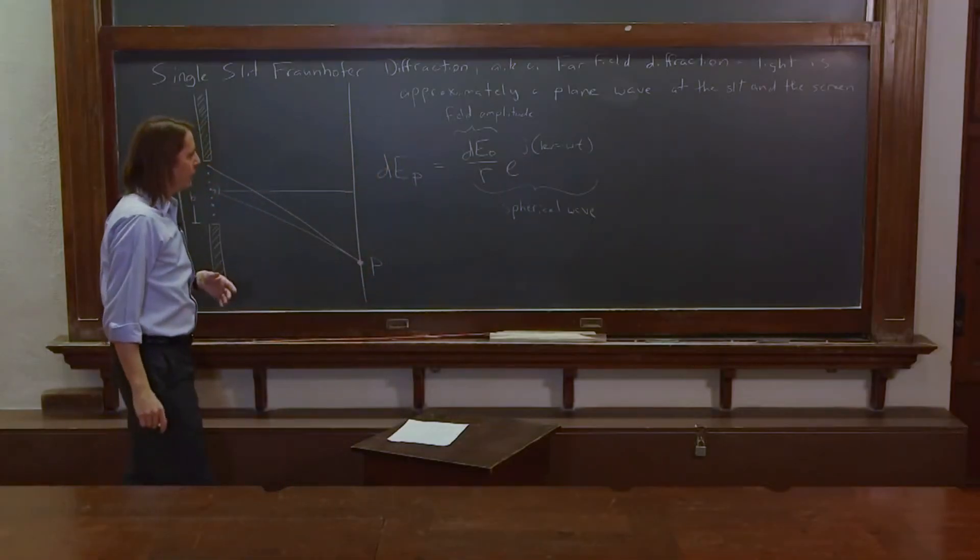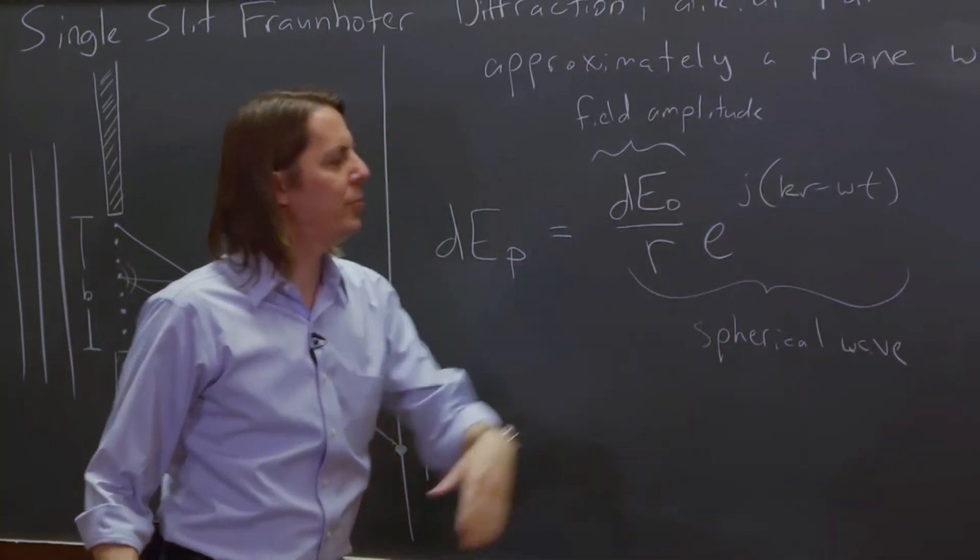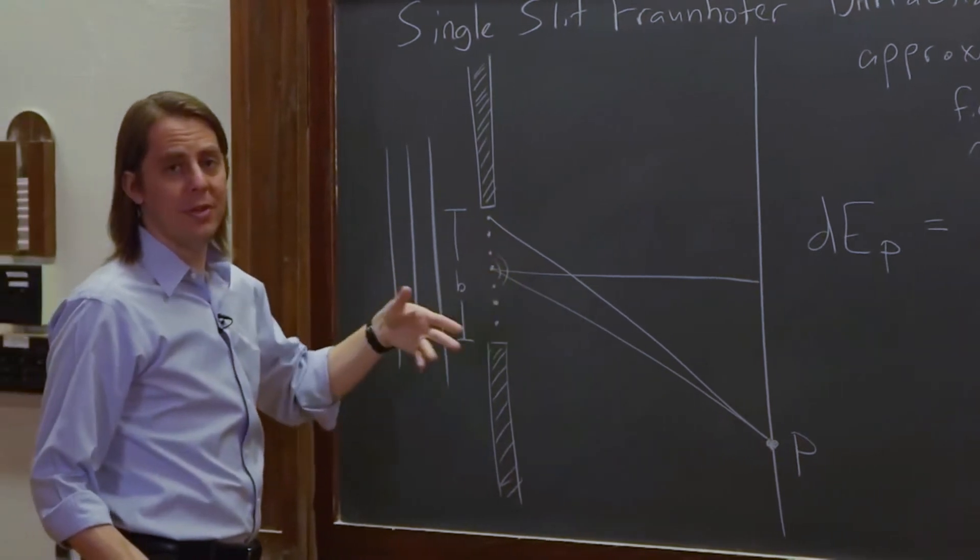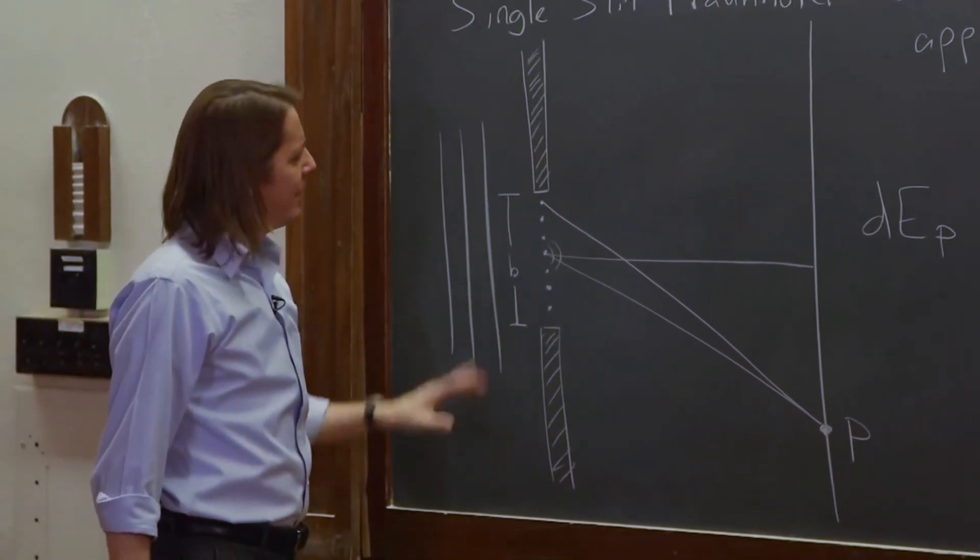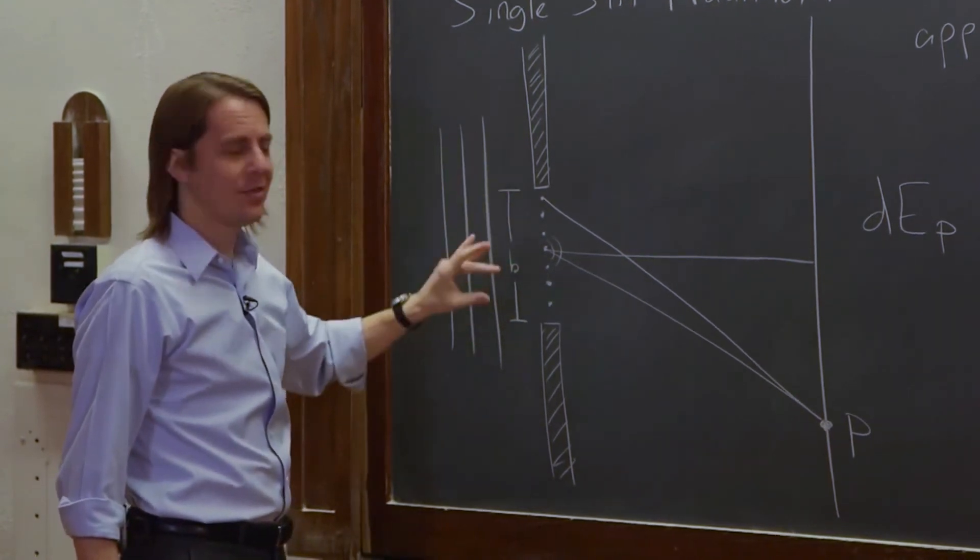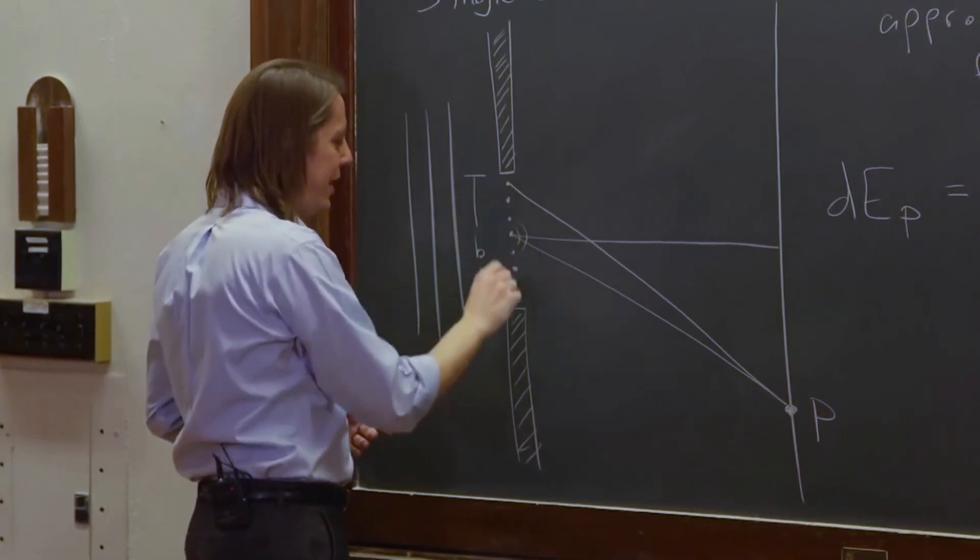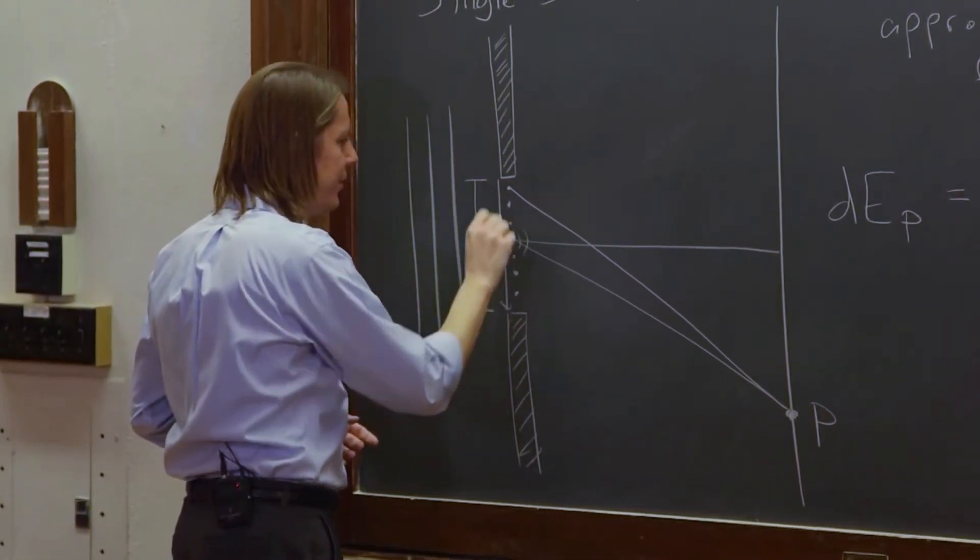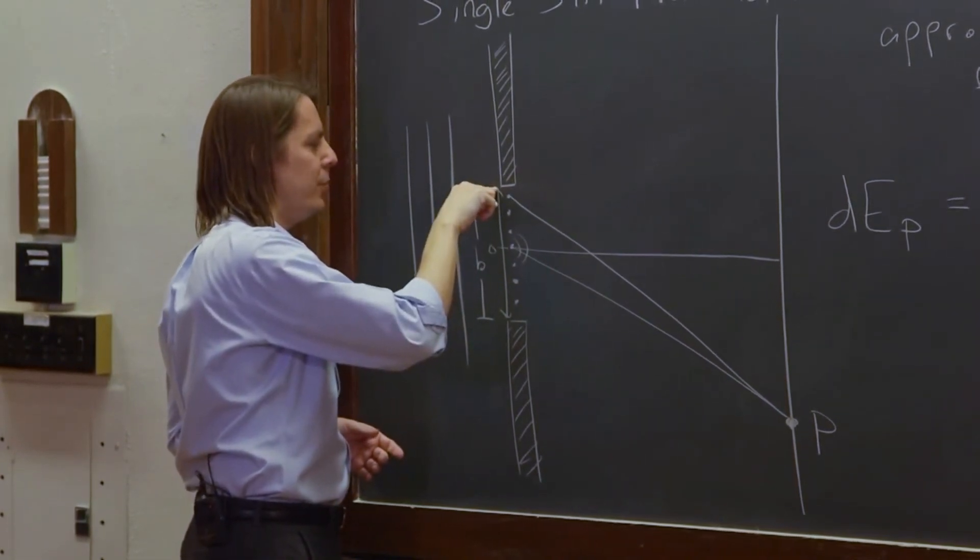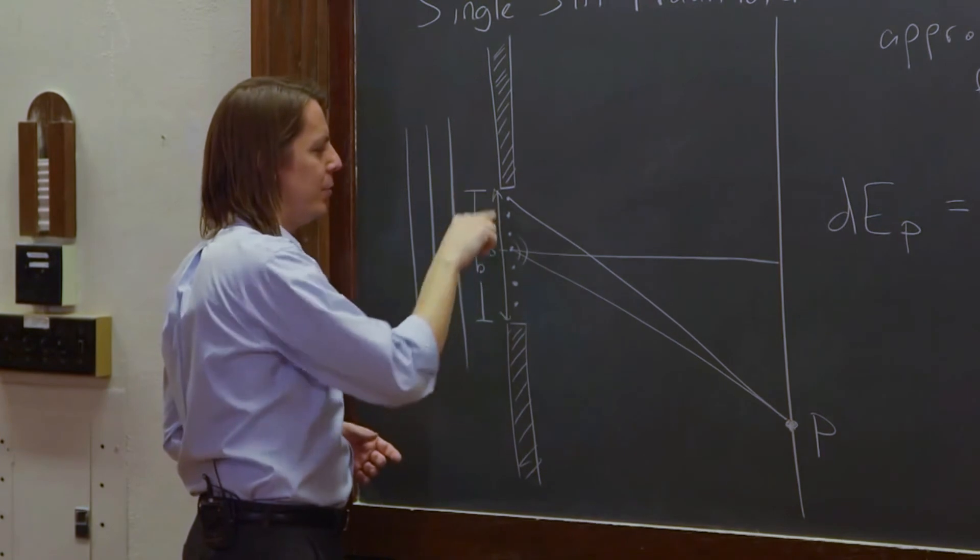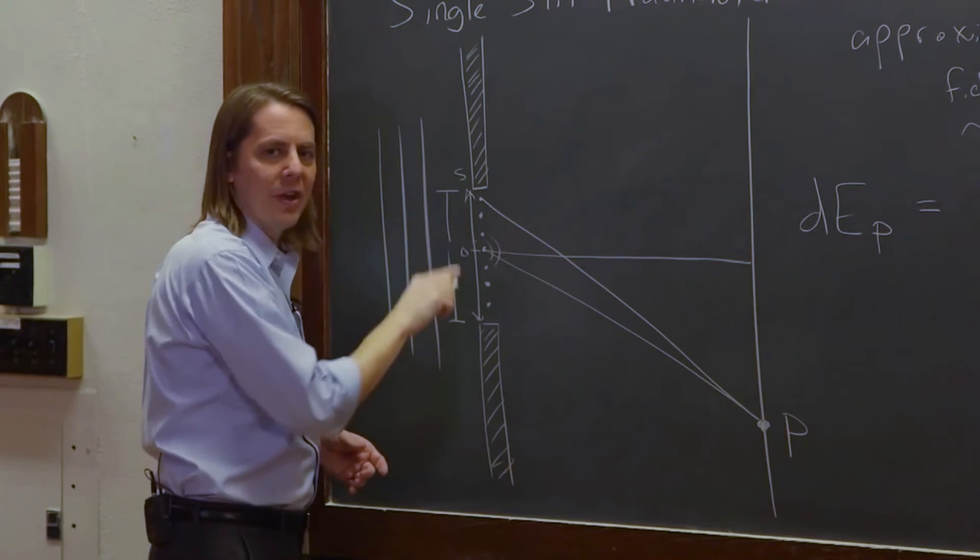So all we've got to do is add up the dE_naught, the field amplitude over R, e to the j(kR - ωt), for each one of these, and keep up with the phase differences. Well, we haven't yet built in the little differential, dS. We're going to move around in this slit, and we're going to move along an axis. So we could draw a little axis here, like this, the slit axis, and we could say, this is the origin of the slit axis. It goes up to B over 2, and it goes to negative B over 2, and if we call this axis S, then little differentials, dS, move along this axis.